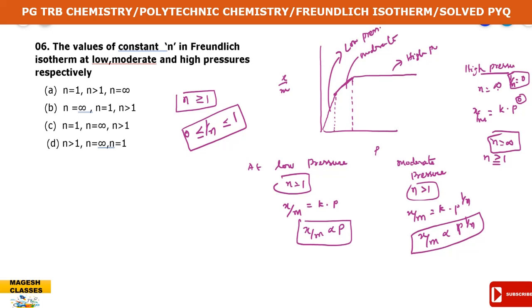So to summarize: at low pressure, n equals 1. At moderate pressure, n is greater than 1. At high pressure, n equals infinity. Your answer is confirmed accordingly.